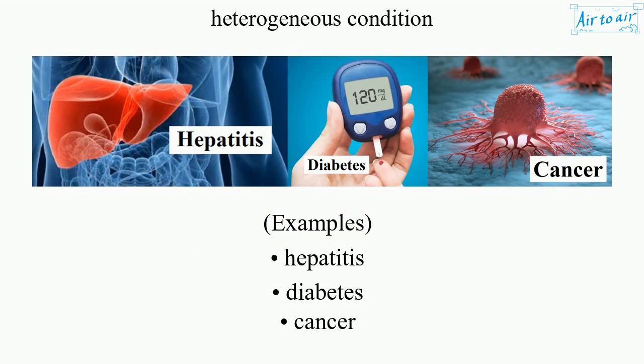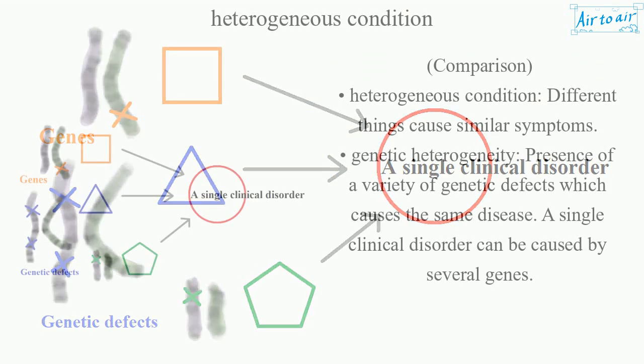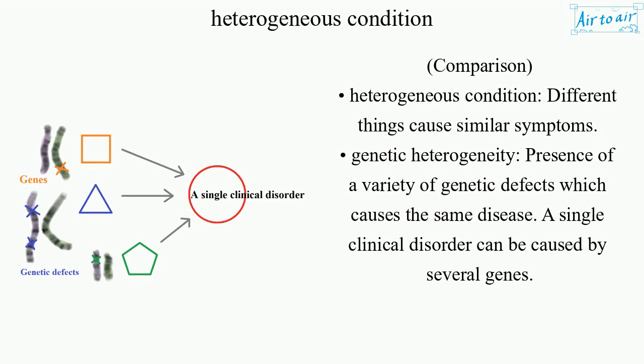Additional examples include Hepatitis, Diabetes, and Cancer. In comparison, a heterogeneous condition is one where different things cause similar symptoms.